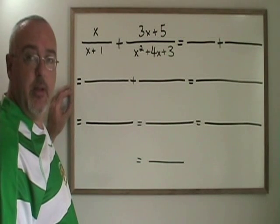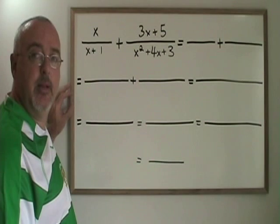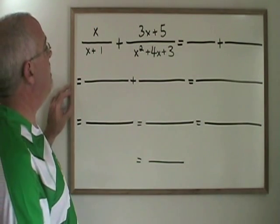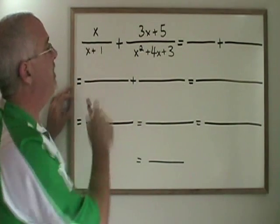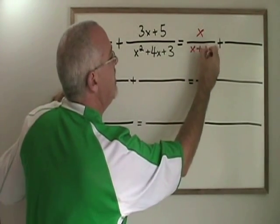The first step, like usual, is to make sure that all expressions are factored completely. In this case, both the numerator and the denominator in this first fraction are already as simplified as they can be.